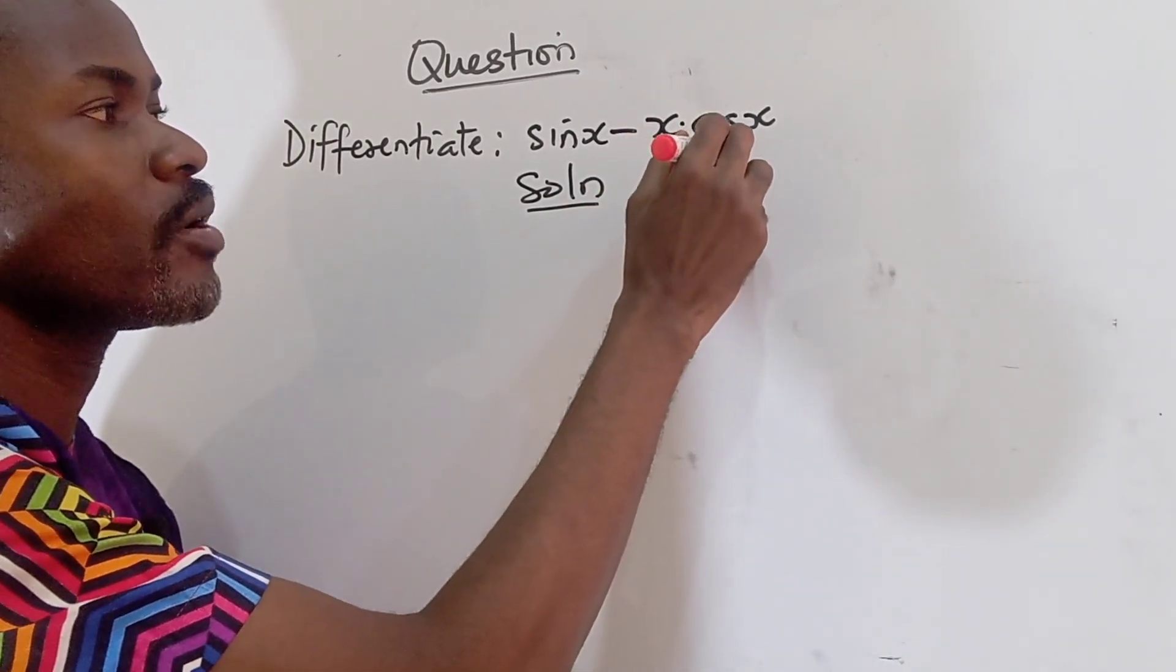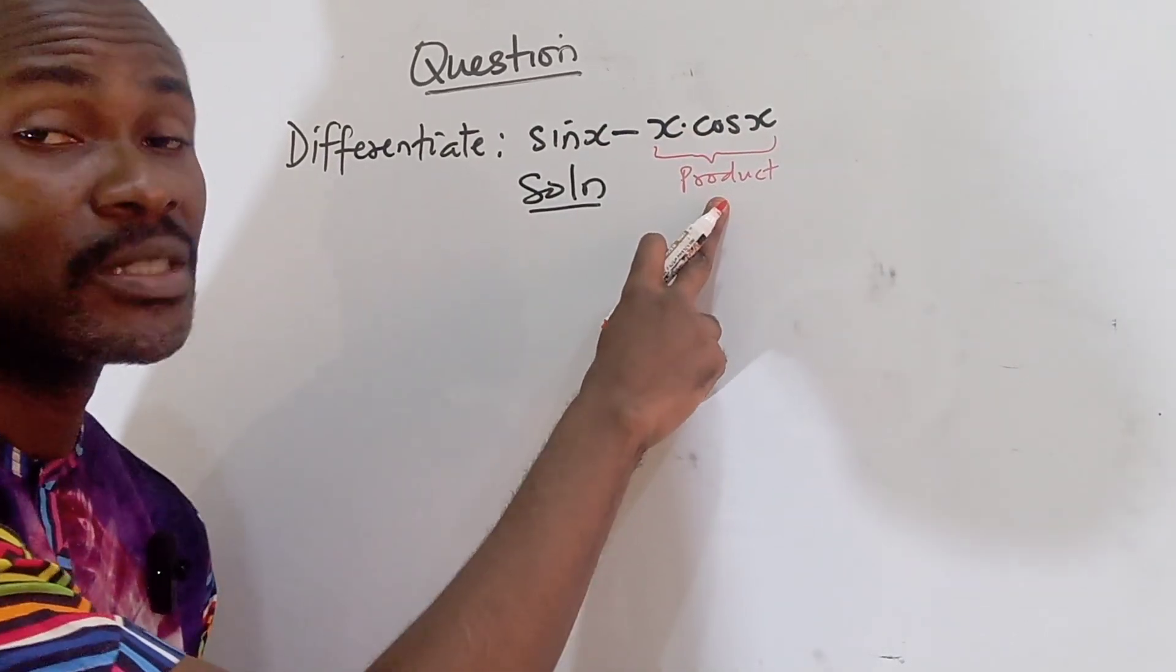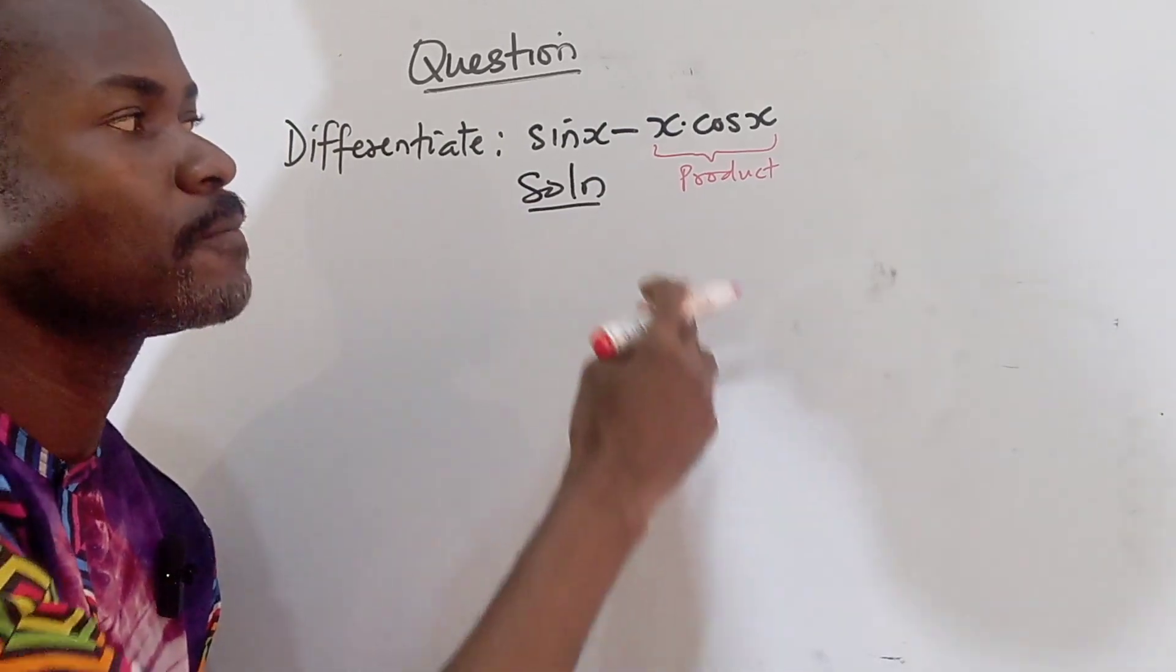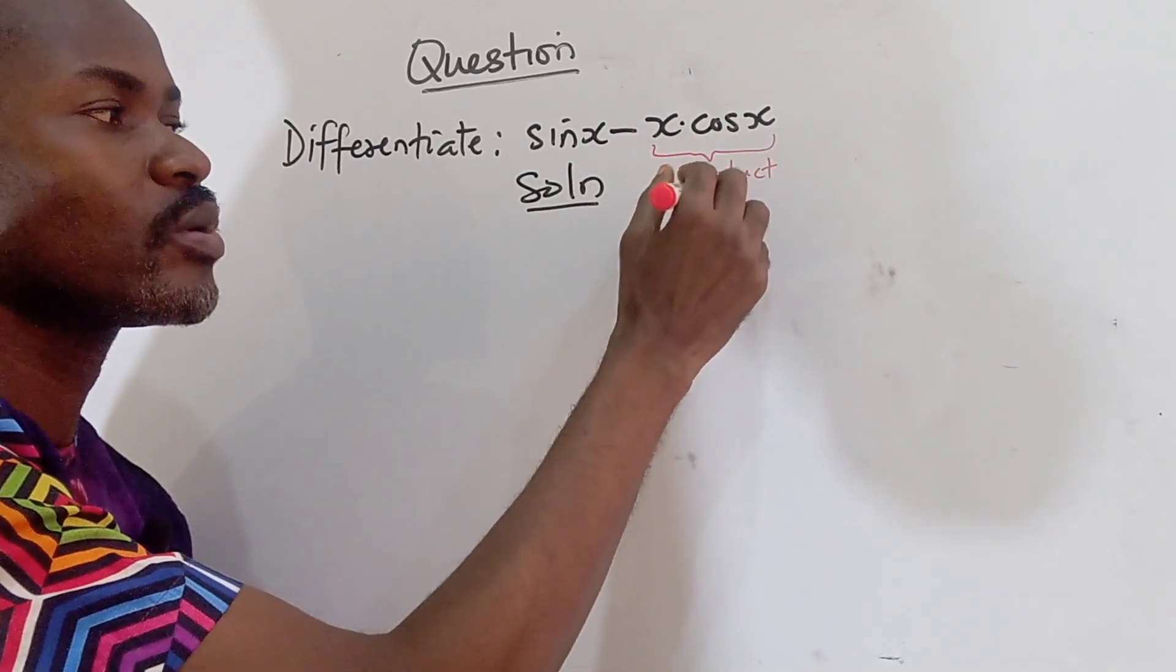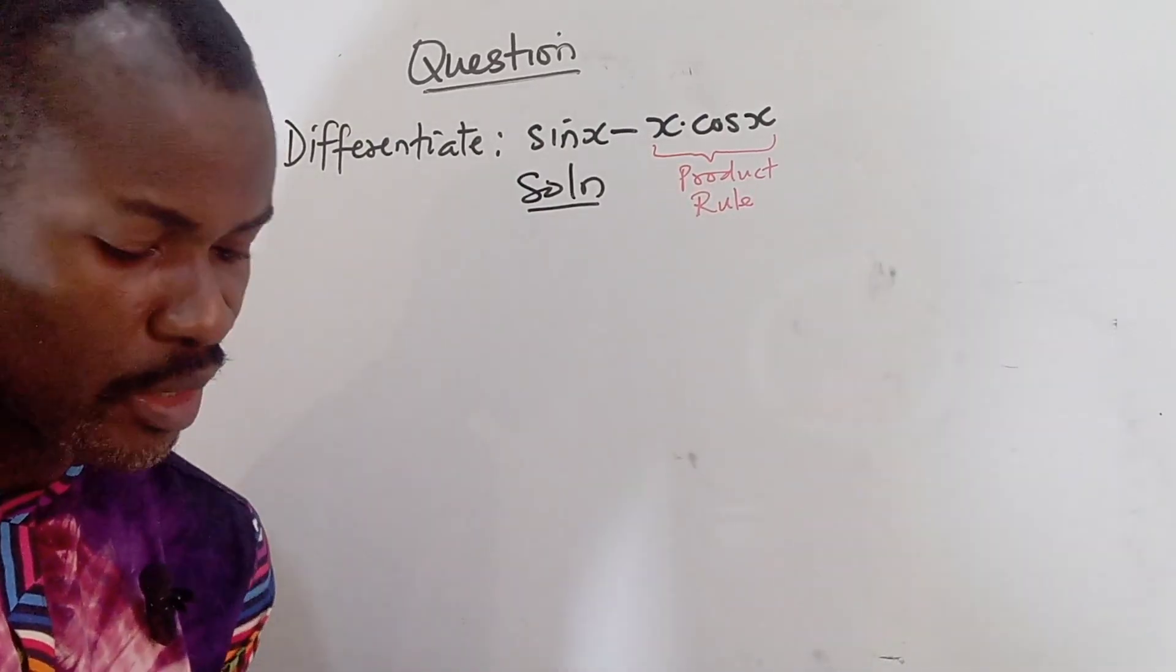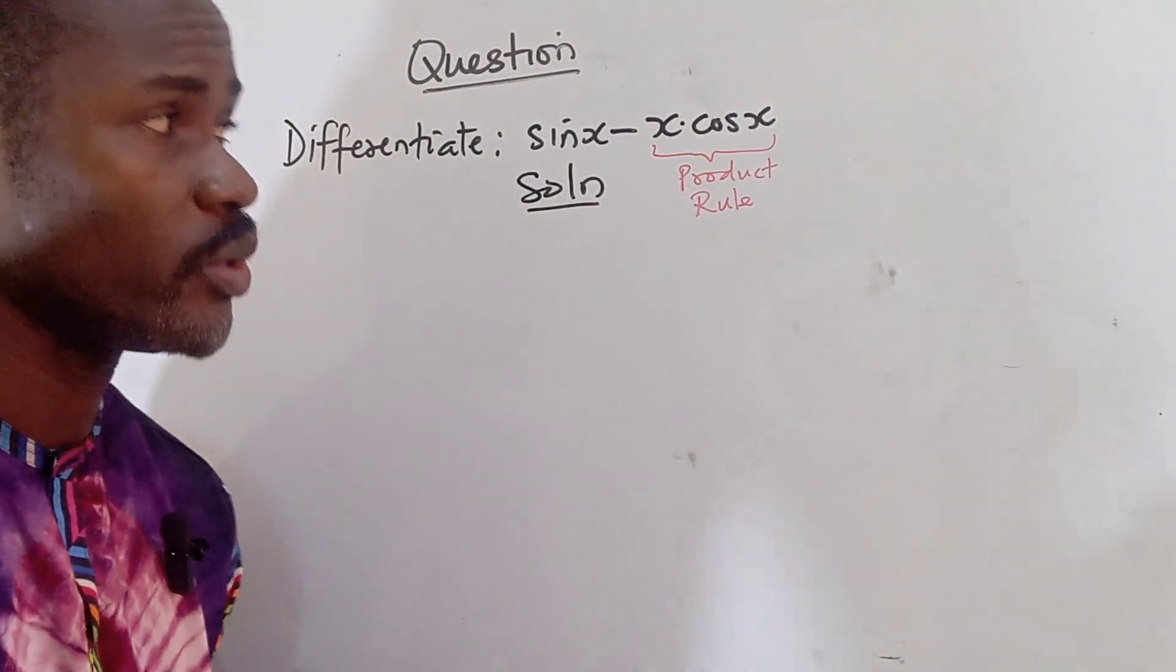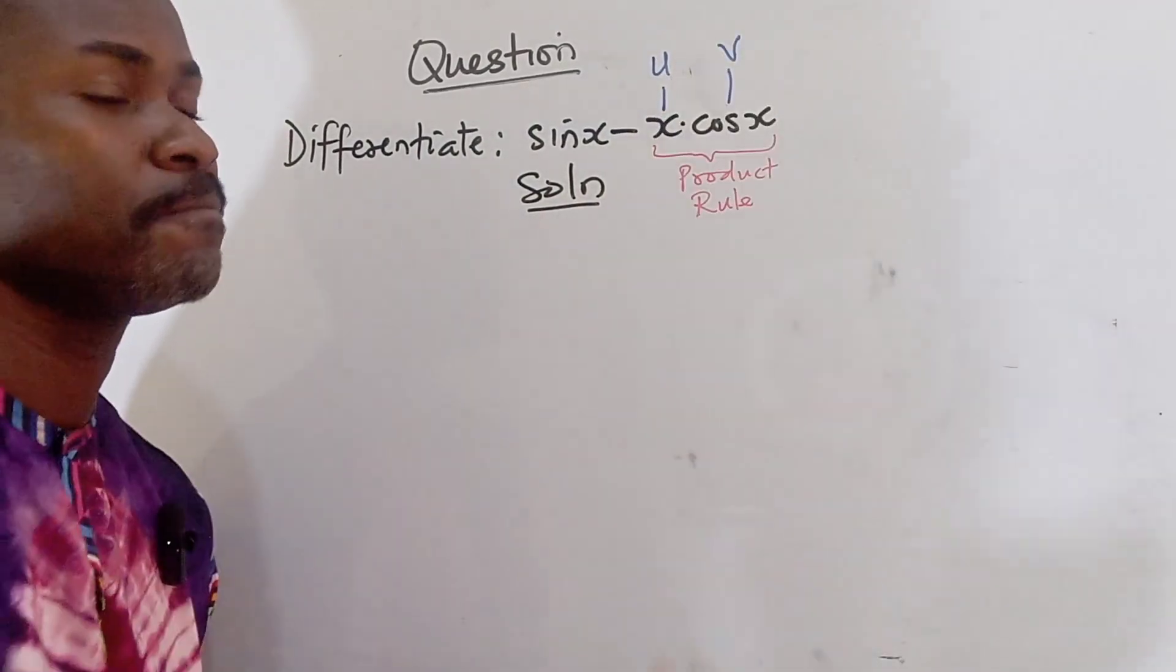And on this part, I'm observing that here is a product. So something is multiplying x. We have x multiplied by cos x. So that's the product. This dot stands for product multiplication. So for this part, we are going to apply our product rule, which if you have some basic knowledge of calculus or differentiation, you know that this becomes our u and this becomes our v.